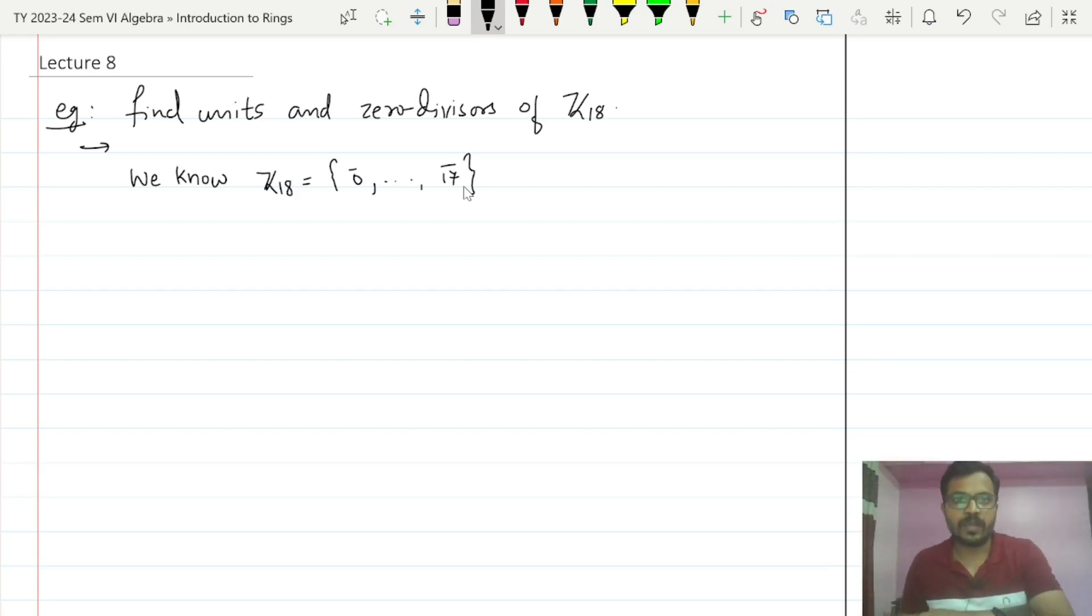Now we have to find all the units and zero divisors. If we use the basic definition to do it, it will take a lot of time. So what is the easiest way to do it? The easiest way is to use the previous theorem that we have learned. Any non-zero element in Zn is either a unit or a zero divisor. It means if we are able to find either units or zero divisors, we are through.